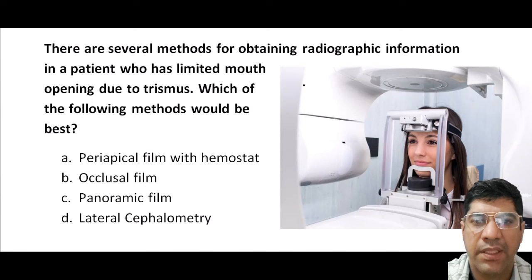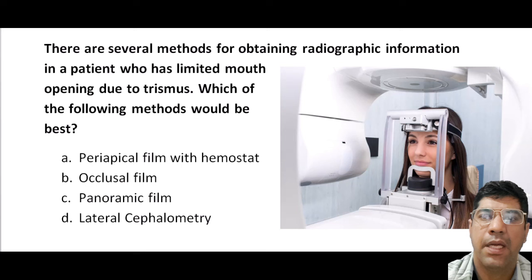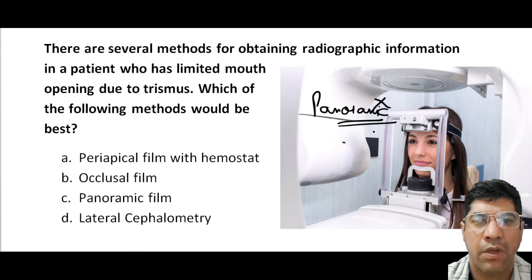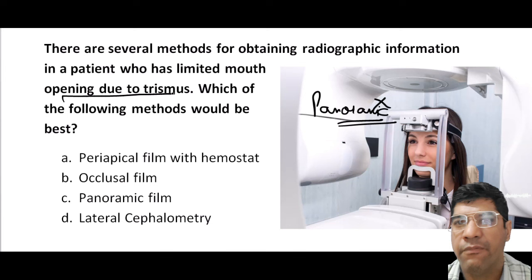For patients with limited mouth opening due to trismus, which radiographic method is best? The panoramic radiograph provides a wide view of the entire mouth including upper and lower jaws, teeth, and supporting structures all in one image. The mouth does not need to be open wide for this type of x-ray, making it suitable for individuals with limited mouth opening or trismus.